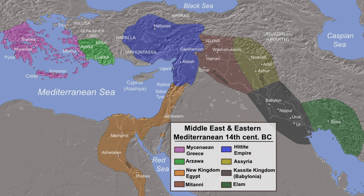The Shasu were Semitic-speaking cattle nomads in the Levant from the Late Bronze Age to the Early Iron Age. In a 15th-century BCE list of enemies inscribed on column bases at the Temple of Soleb built by Amenhotep III, six groups of Shasu are noted.